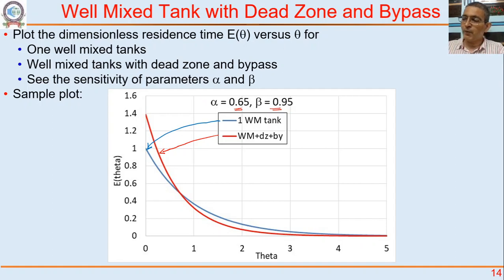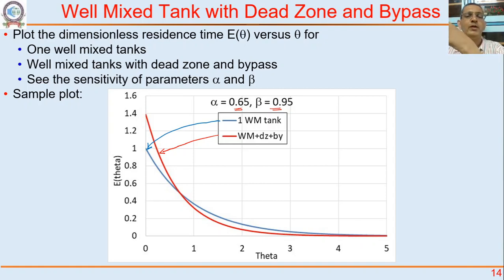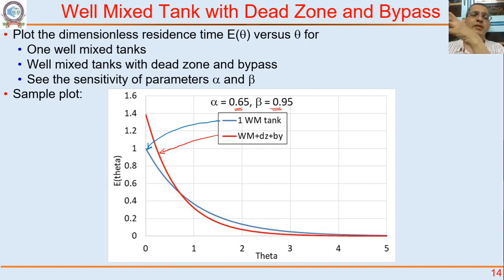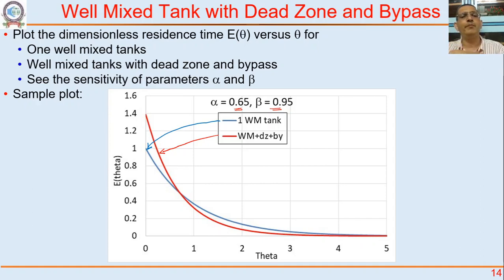The point I am making is that we can now compare different scenarios: well-mixed tank, plug flow, bypass, series, parallel, or any combination. We try different combinations and see which one fits the observed RTD best. Once we identify a combination that matches, we can say our real-life reactor behaves like that combination of idealized reactors. That is why this part is called compartment models.